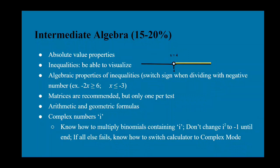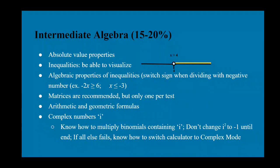Memorize the arithmetic and geometric sequence formulas — both the sum formulas and the formula for the next value in a sequence. The complex number i equals the square root of negative one (imaginary, since you can't take the square root of a negative). Know how to multiply binomials containing i. On the TI-84 Plus CE, pressing Second then the period key gives you i in complex mode. A helpful tip: don't substitute i² = −1 until the very end of your work to avoid confusion.